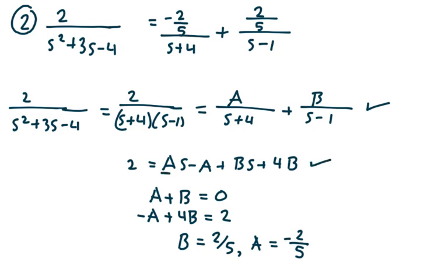If I take a and add it to b, I have to get 0, because you can think of this as 0s plus 2 — there are 0 s's on the left side. And if I take negative a and add 4b, I get 2. When I solve, I get b equals 2 fifths and a equals negative 2 fifths. So 2 over s squared plus 3s minus 4 equals negative 2 fifths over (s plus 4) plus 2 fifths over (s minus 1).